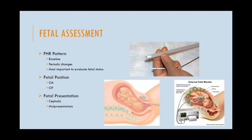Another way we do fetal assessment is determining presentation — is the baby presenting cephalic, head down, or do we have some type of malpresentation going on? Is the baby breech? Is the shoulder presenting? Those are important things to note, and the way we figure those out is by doing a sterile vaginal exam. The other way we could determine fetal position is through Leopold's Maneuver, like we discussed in the last lecture.